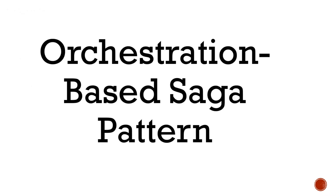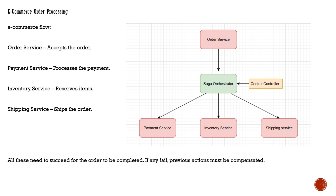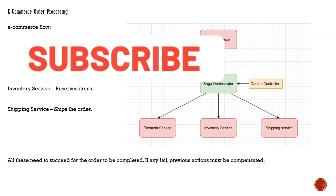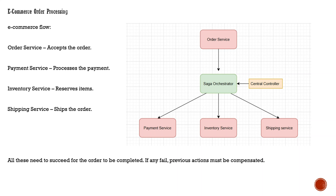Let's take an example of the orchestration-based Saga design pattern with e-commerce order processing. An order is accepted by the order service, and then a Saga orchestrator — acting as a mediator — controls the next set of actions. It first calls the payment service, then the inventory service, and finally the shipping service, all in sequence. The Saga orchestrator controls every step and the next action to be performed, and all steps must succeed for the complete transaction to be considered complete.